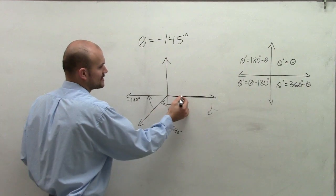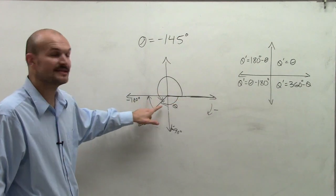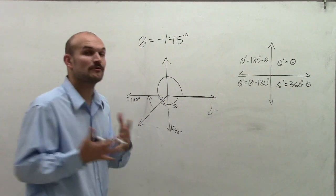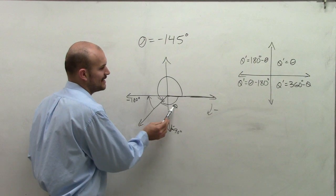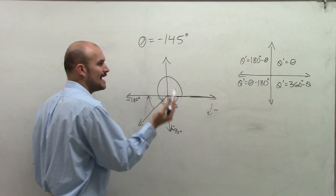So what I want to do is find the angle that starts at the same initial side and ends at the same terminal side but is positive. So to do that, remember, we found coterminal angles. To find coterminal angles, if I have my negative angle, what we notice is my angle plus my coterminal angle add up to 360.